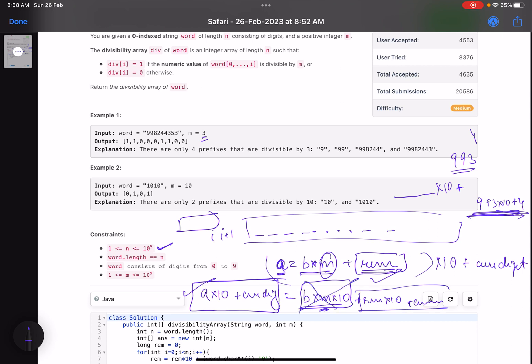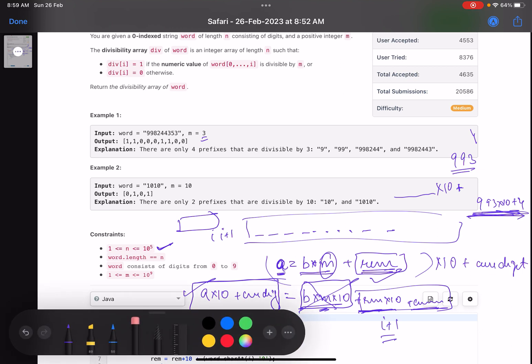Now comes this part: remainder into 10 plus current digit. That means to find the remainder for i plus 1th position, all I need is the remainder for the ith position. I will multiply it by 10, add the current digit, and find the remainder again. If the current remainder is 0, then I'll put 1 at that particular position, else I'll put 0. In short, you do not actually need to form the prefix number, rather you are just dependent on the remainder that you have seen till now.